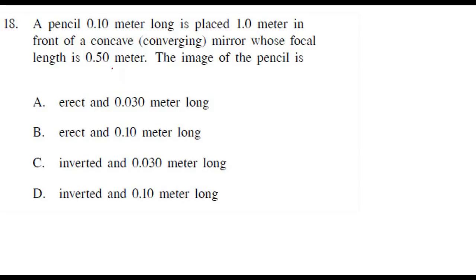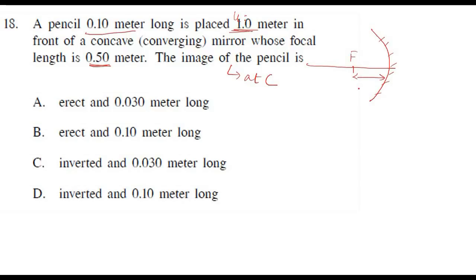Where is the object? This pencil is 1 meter long — this is the object distance and this is the focal length. The object distance u is double the focal length, so the object is at C. The mirror is here, focus is at 0.5 meters, so from here 1 meter puts the object at C. The object at C will have an image of the same size at C — but it is not erect, it is an inverted image of the same height. Answer is option D.